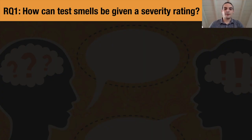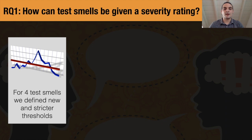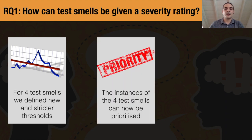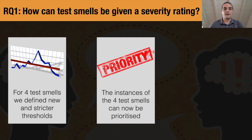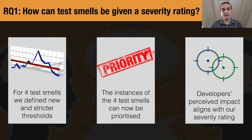To sum up: for four test smells, we defined new and stricter thresholds that decrease the number of false positives detected by the tool. By using the new thresholds, test smells can now be prioritized, so developers can focus on the instances with higher impact first. Finally, developers' perceived impact aligns with our severity rating, demonstrating that the thresholds correctly identify the worst cases.